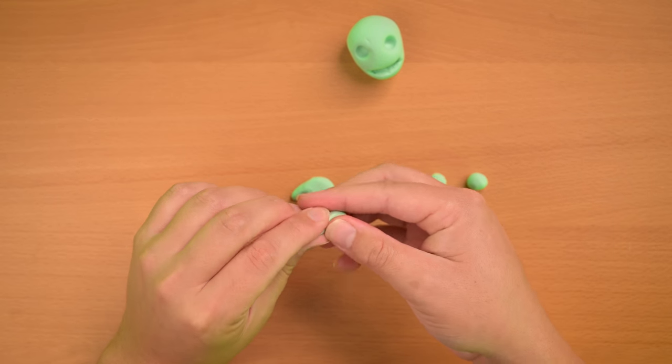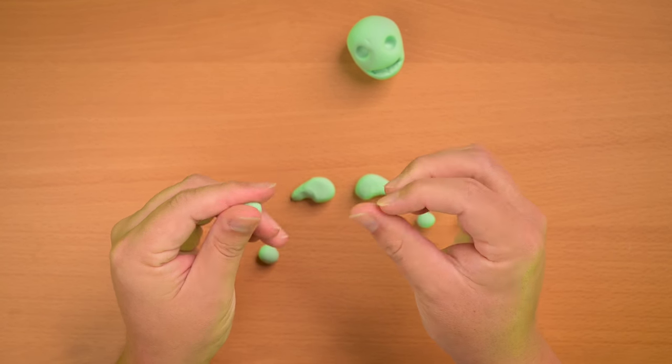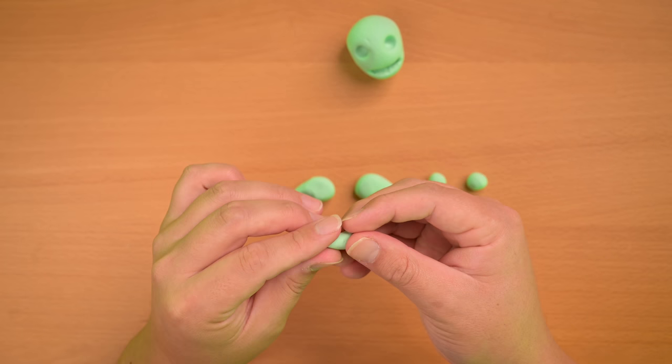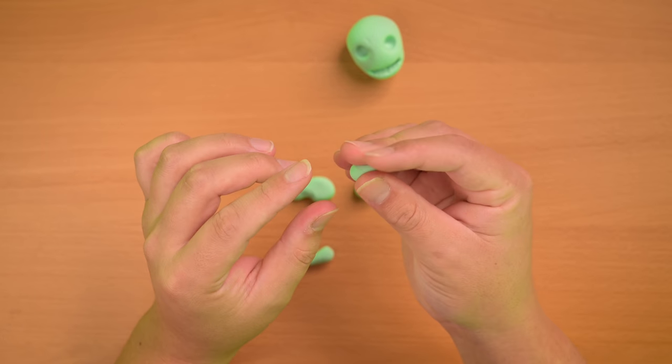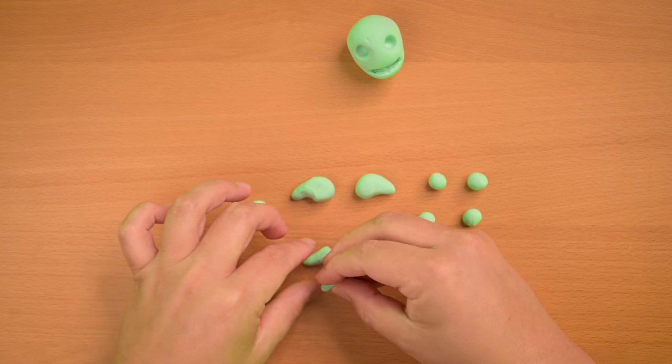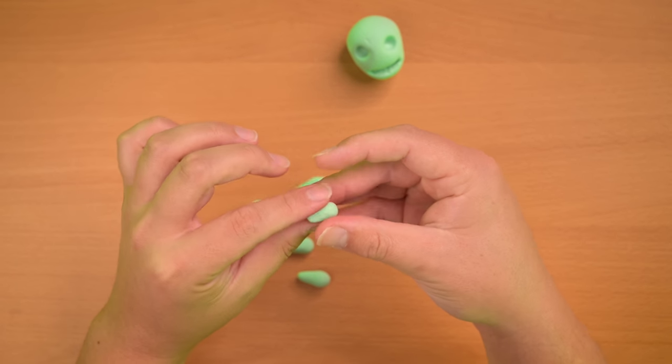Alright, so we're rolling them all. So we're gonna make little cylinder shapes and then kind of make it into a cone. Gonna do that for all of these little shapes. It's pretty simple.